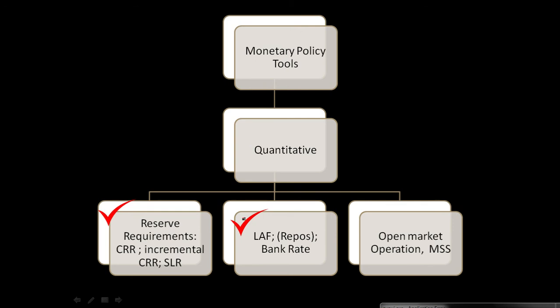Through the LAF window, money supply is controlled in the following way: if the RBI increases the repo rate, the cost for banks increases, and banks charge more interest to borrowers. As a result, borrowers are less inclined to take loans, reducing the credit cycle. The RBI is not directly injecting or withdrawing money from the system, but it is affecting the credit cycle — demand for loans will decrease if the RBI increases its policy rate. This is how money supply is affected by the LAF window. In the next video, we will discuss open market operations.